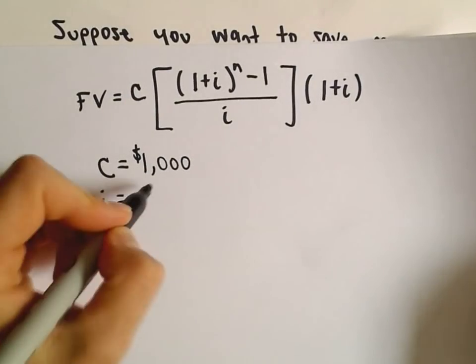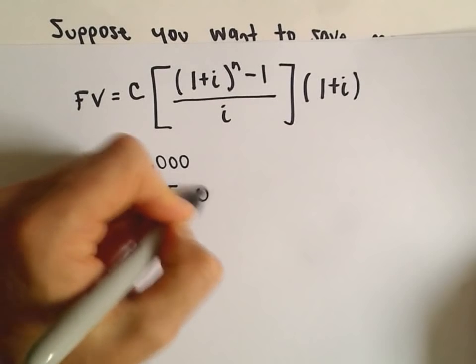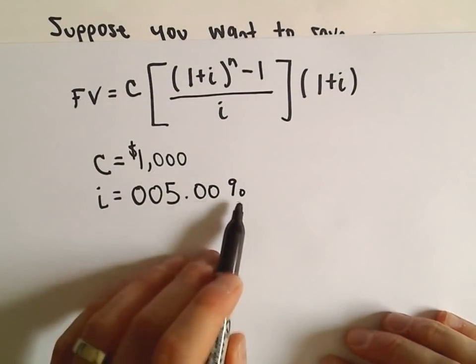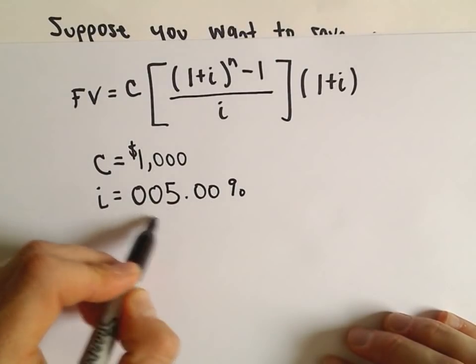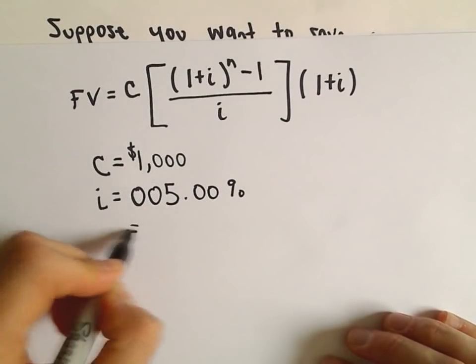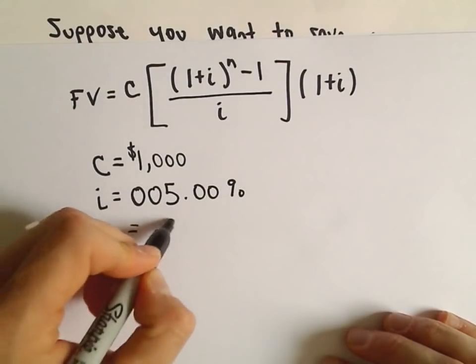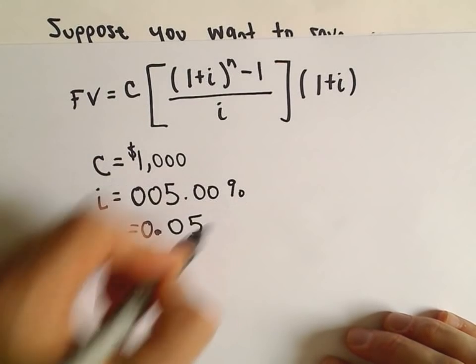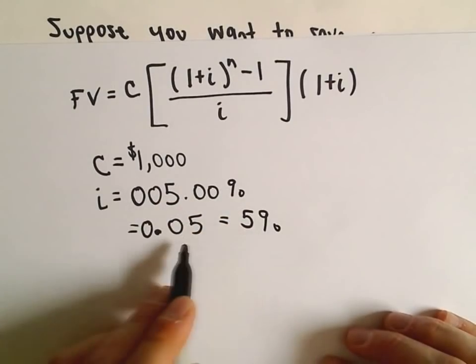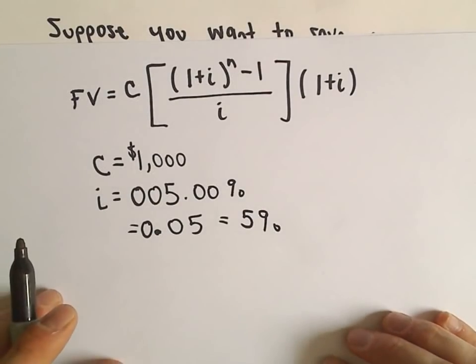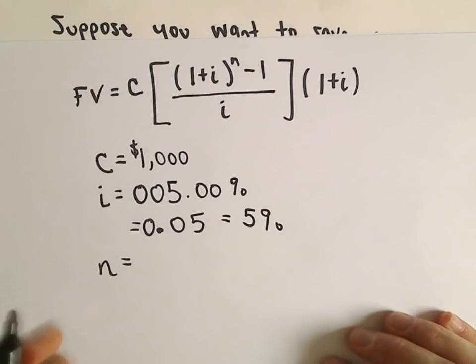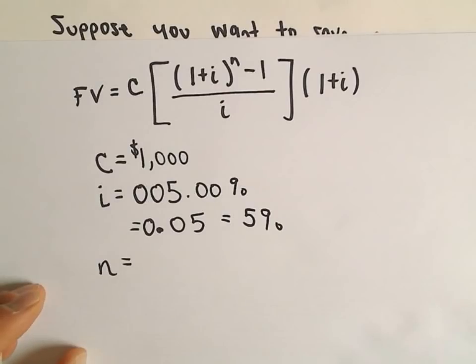i is going to be the interest rate, and we said we're getting an interest rate of 5%. I'm going to put a couple zeros in front of this. If you've forgotten how to go from a percentage to a decimal, all we do is we just move the decimal place two places to the left. So 5% is the same thing as the decimal 0.05. And again, this is crucial because otherwise you get some crazy answers.